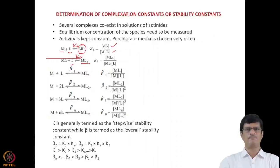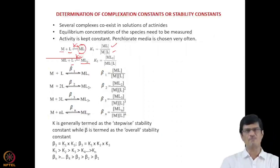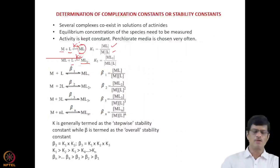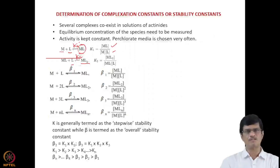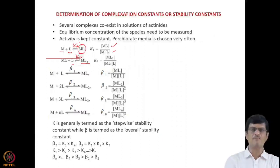If complex formation takes place where the metal ion reacts with two ligands simultaneously to give ML₂, this is described by the overall complex formation constant, defined as β₂. Note that β₁ is the same as K1, but β₂ differs from K2 because here the metal ion reacts at one stage with two molecules of ligand. The overall constant β₂ is given by the concentration of ML₂ divided by the concentration of M multiplied by the concentration of L raised to the power 2. Similarly, β₃ up to βₙ can be defined.